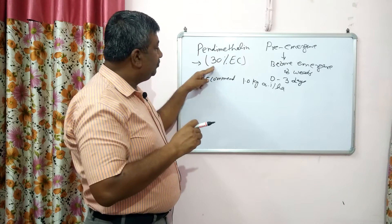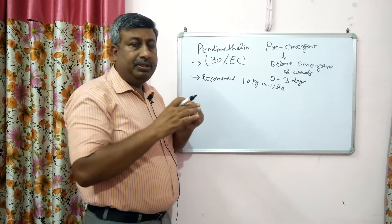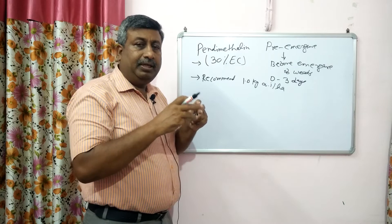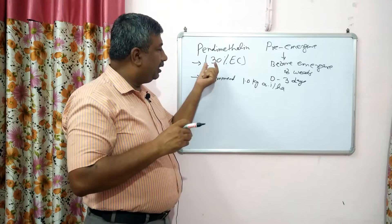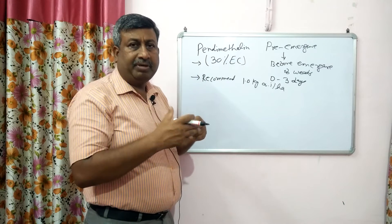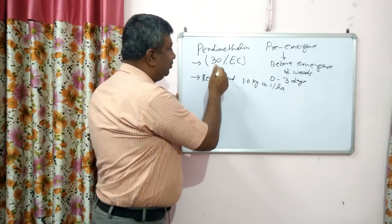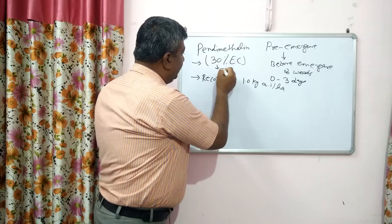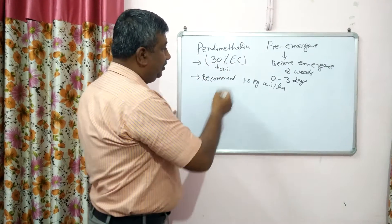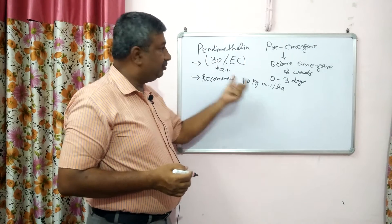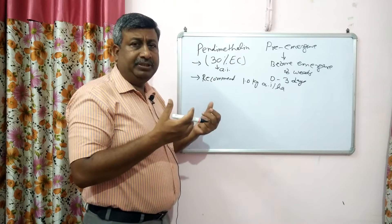Pendimethalin is an EC — emulsified concentrate — in liquid, golden yellow color. 30% means if you apply 100 kg of this pendimethalin, then only 30 kg is the toxicant and 70% is solvent. The toxicant amount is the active ingredient (AI). The recommended rate is 1 kg AI per hectare.